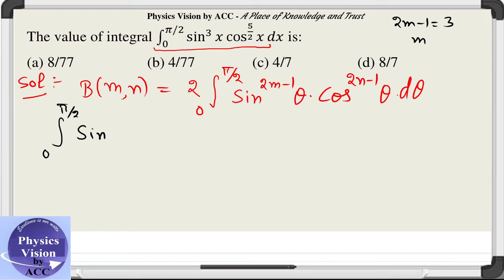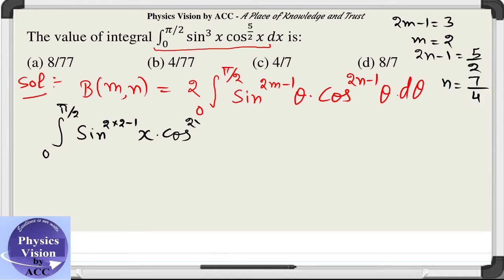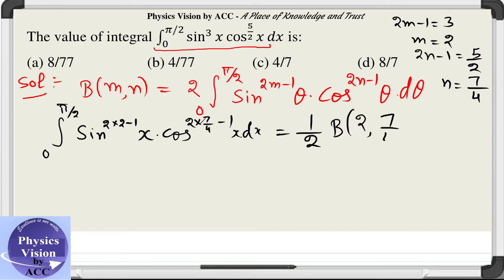So sin^(2*2 - 1) theta into cos^(2n-1) theta. For the cosine part, 2n minus 1 equals 5/2, which implies n equals 5/2 plus 1/2, that is 7/4. Using this, our given integral is equal to (1/2) beta(2, 7/4).